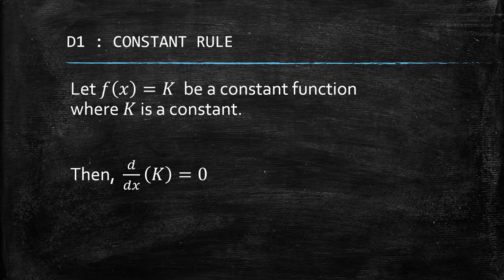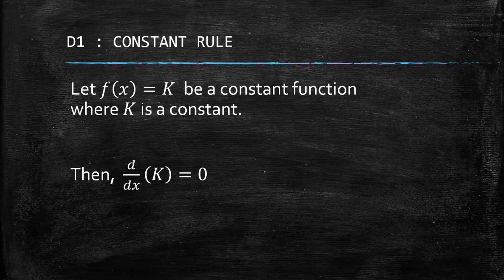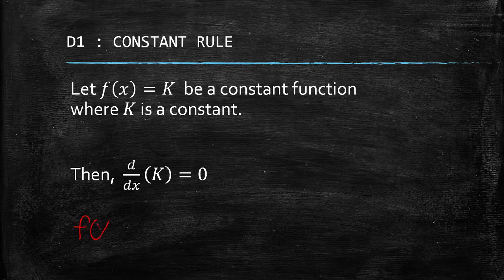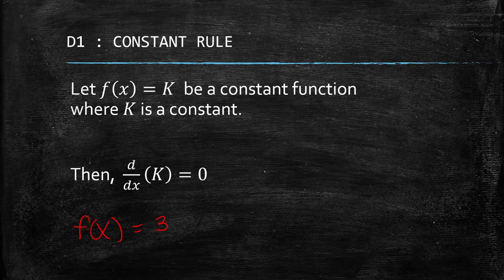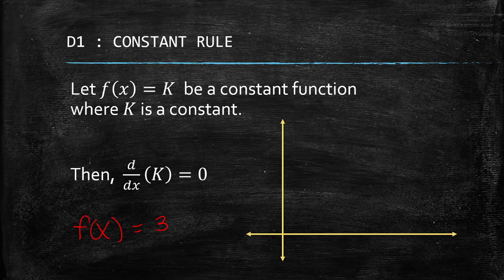Constant functions are functions with a constant and do not contain any variable at all. For example, we can have f(x) equals 3. So if you have this kind of given, automatically the derivative of this is zero.